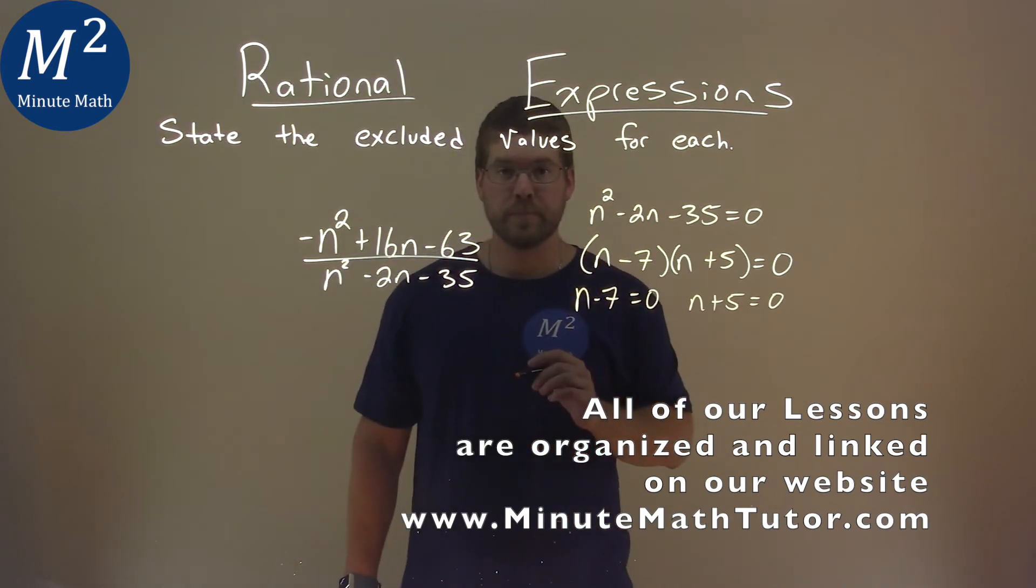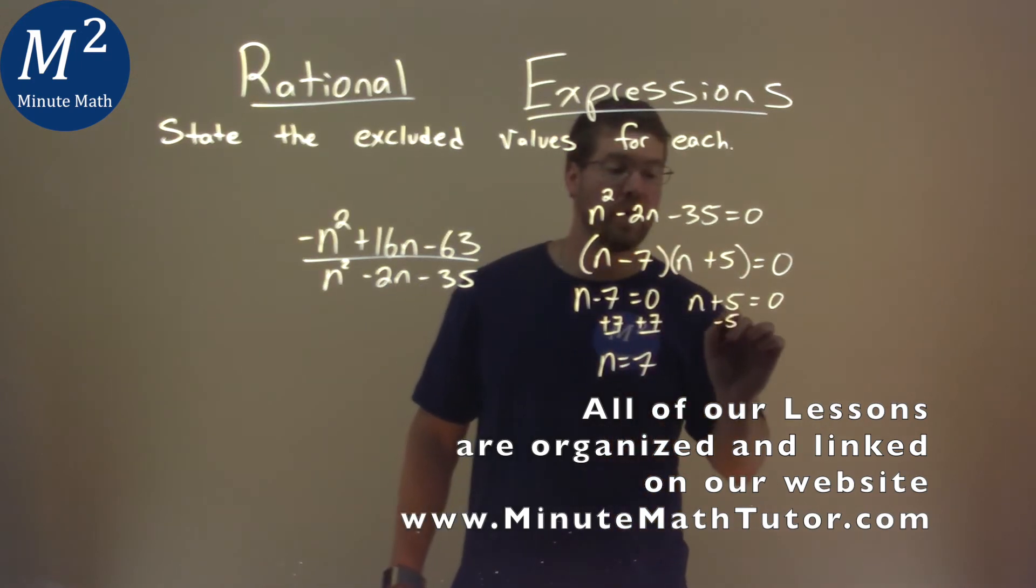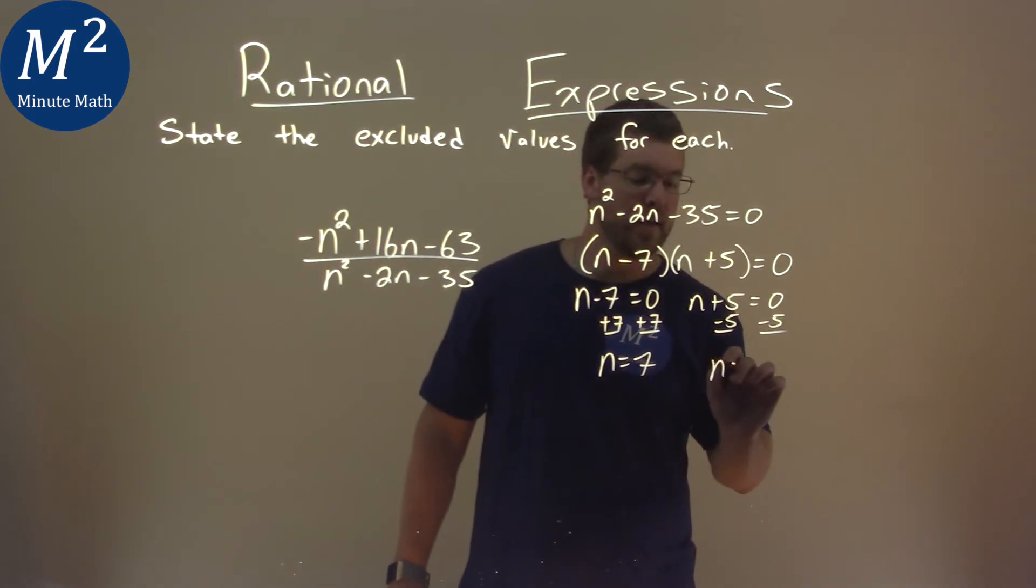Now it's time to solve. We add a 7 to both sides, not too bad, n equals a positive 7. Subtract a 5 to both sides, and n equals a negative 5.